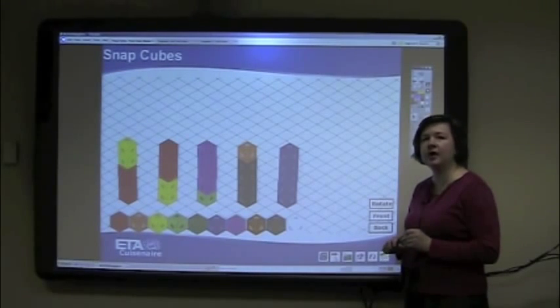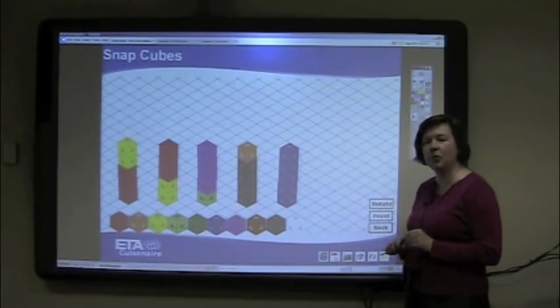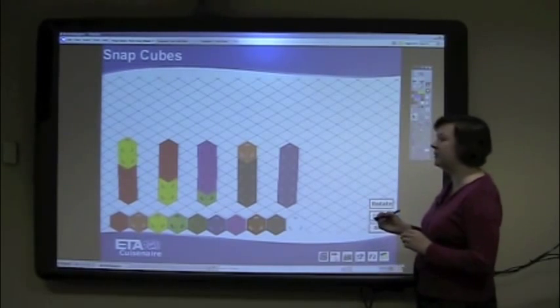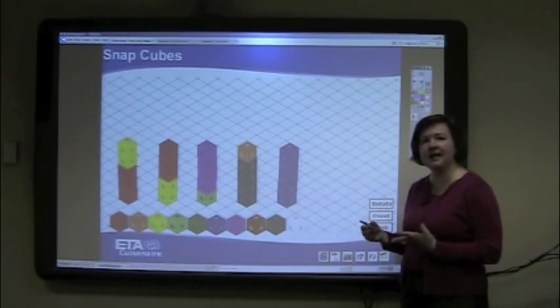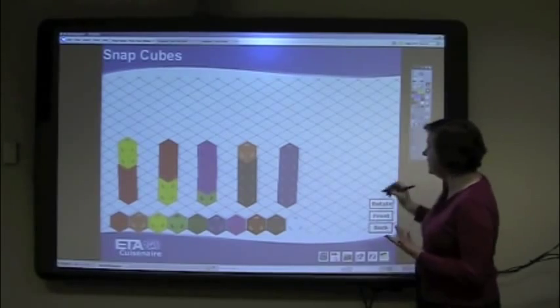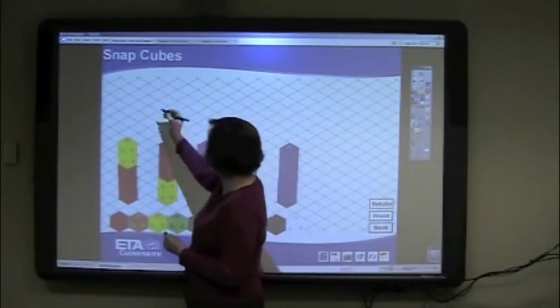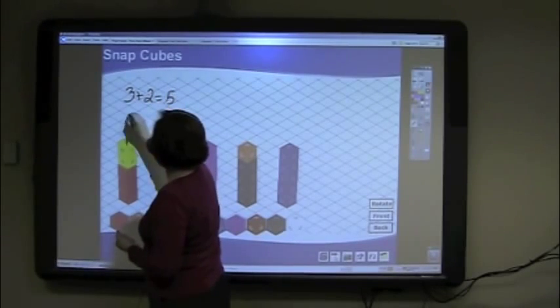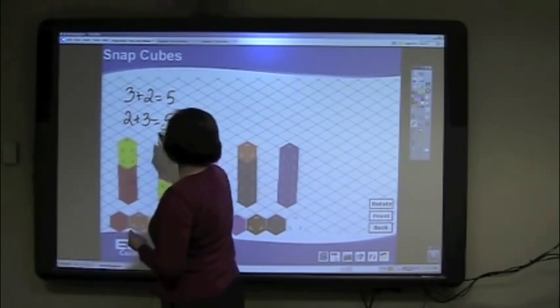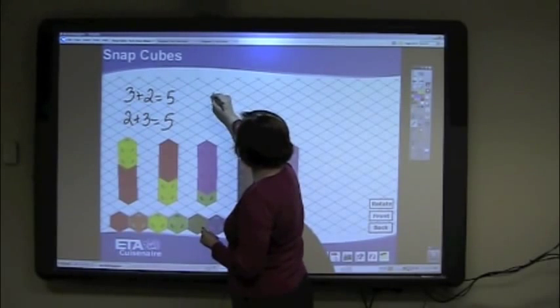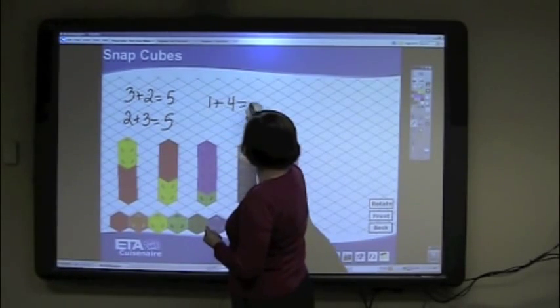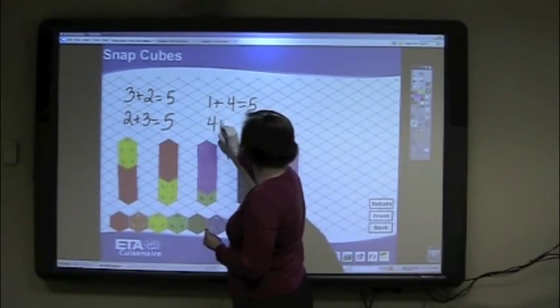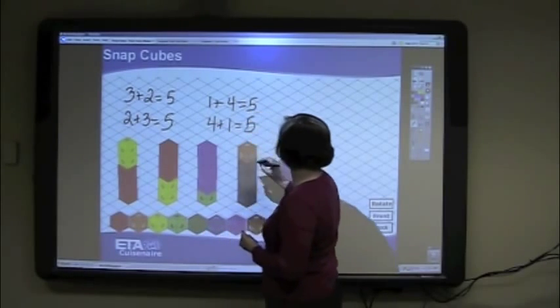The problem asked for trains of two colors, and that only has one. But if I'm thinking about fact families and identities, I can begin to label these as three plus two equals five, two plus three equals five for that first pair, one plus four equals five, four plus one equals five for the second pair.